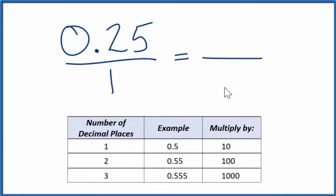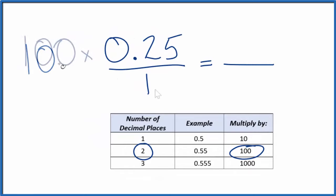If we have two decimal places here, so we have one, two decimal places. If we multiply this number by 100, that'll give us a whole number. So let's multiply this by 100. And 100 times 0.25, that's just 25.